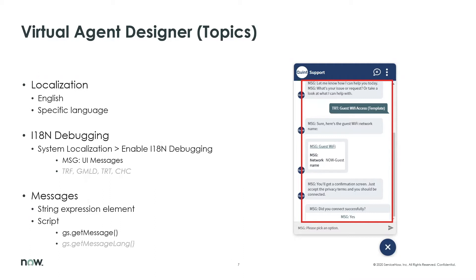You might already notice on the image on this slide that prefixes are shown. This is done with using the I18n debugging, which shows translation prefixes on strings. These prefixes indicate which strings can be translated and which table contains the string and translation. Concerning the Virtual Agent Designer, most prefixes you see are concerning MSG, which stands for UI messages. You might also come across some others — especially TRT is a good one to mention, which is about translated text used for the Virtual Agent topic names.